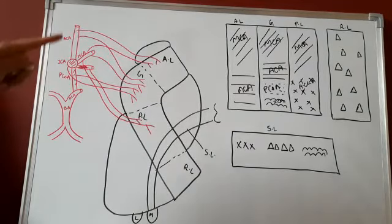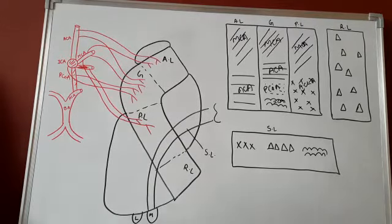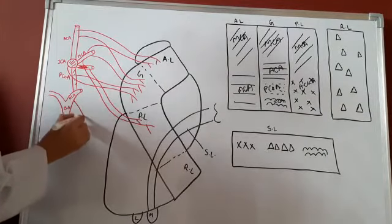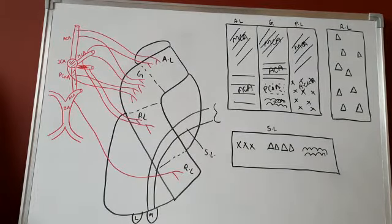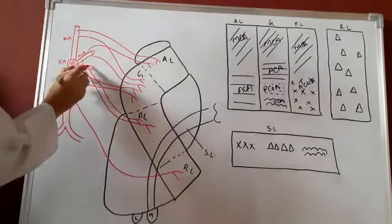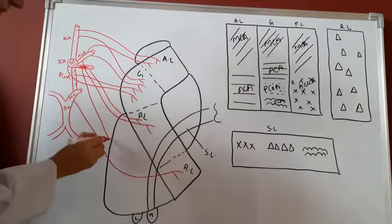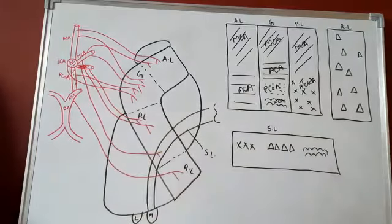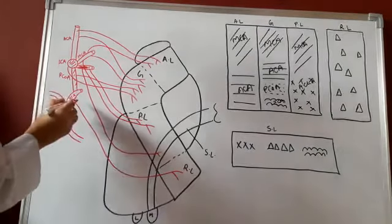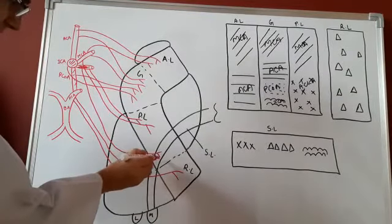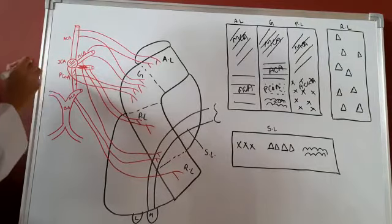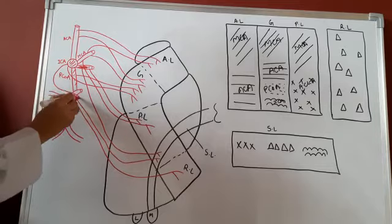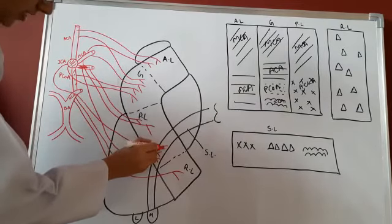The retrolentiform part is supplied only by the posterior cerebral artery, indicated by triangles. You will draw a branch from the posterior cerebral artery to the retrolentiform part. For the sublentiform part, it is supplied by the anterior choroidal artery — one branch from the anterior choroidal artery supplying the sublentiform part. Then you have the posterior cerebral artery, one branch supplying the sublentiform part. And lastly, the internal carotid artery supplies the sublentiform part as well.